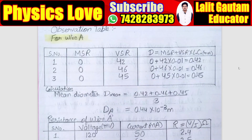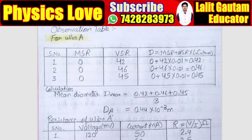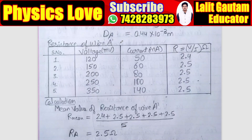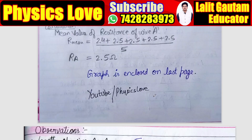Now this is page number 3. In this page there are observation tables. We have to find out the resistivity of two wires. This is for wire A. Serial number, MSR stands for main scale reading, VSR stands for vernier scale reading, and D = MSR + (VSR × least count) in millimeter. Then we have taken out the mean diameter. For the resistance of wire A: serial number, voltage in millivolt, current in milliampere, resistance V upon I, and then we have taken the mean value of the resistance of wire A.